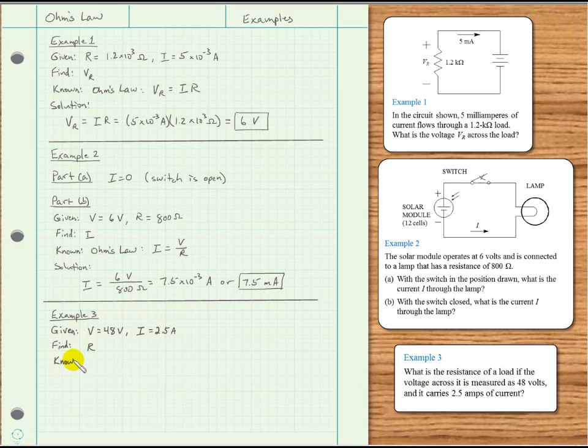Now, what relationship do we know between V, I, and R? Well, once again, it's Ohm's Law. In this case, we'll use the version solved for R. R equals V divided by I. And now we're ready to solve the problem.